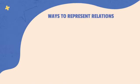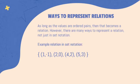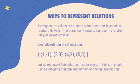Some ways to write or represent relations: As long as the values are ordered pairs, then that becomes a relation. However, there are many ways to represent a relation, not just in set notation. This is an example of a relation written in set notation. Let us represent this relation in table, graph, mapping diagram and domain and range description forms.